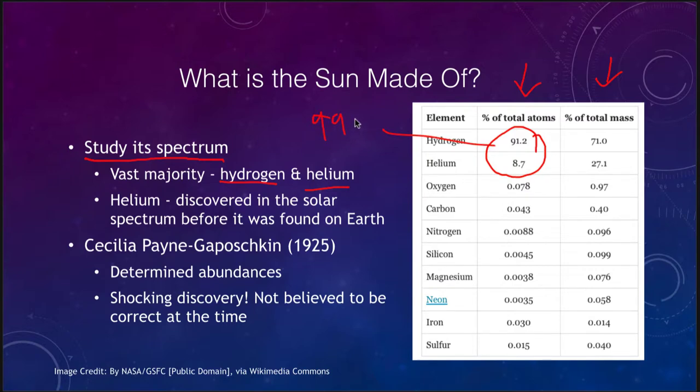So 99.9% of the atoms in the Sun are hydrogen or helium. That means one in a thousand is going to be something other than either hydrogen or helium. If we look at the total mass and we add those together we get 98.2%, so 98.2% of the mass of the Sun is hydrogen or helium and the rest is broken down among other elements.